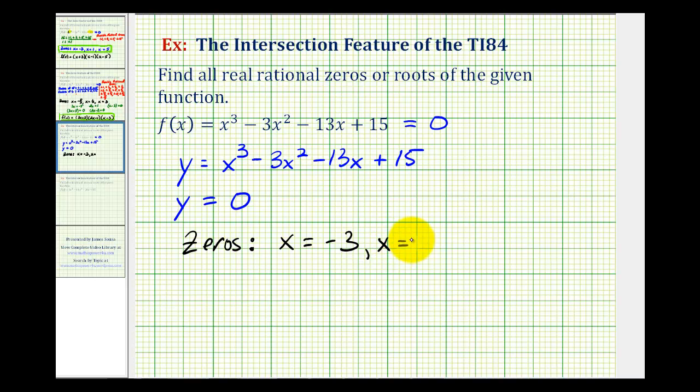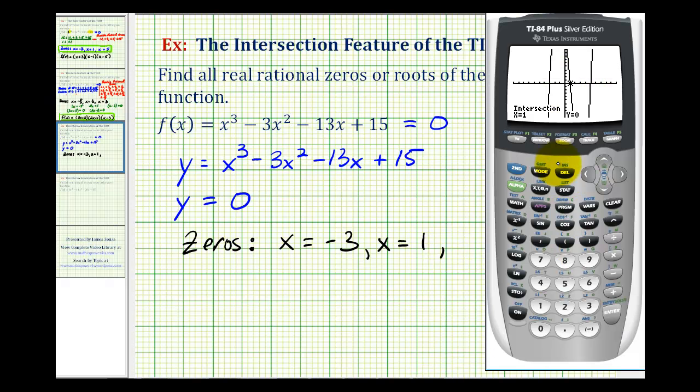So it avoids all that confusion on dealing with the left bound and right bound, whether that means above or below the x-intercept. Now I did make a video using the zero feature, but I think you'll like this method better.